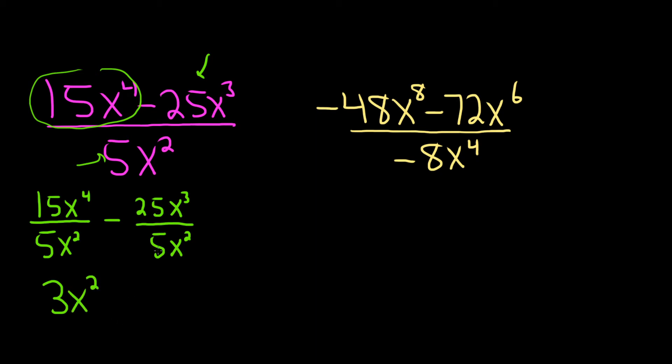And then here 25 over 5 is 5. And again you have x squared in the bottom, x cubed up top. So you'll lose two copies of x up top, so you're left with just one x. And that would be the final answer.